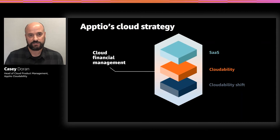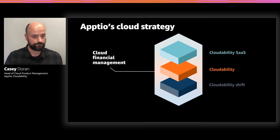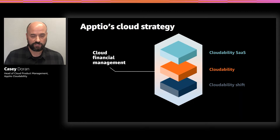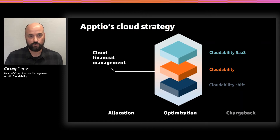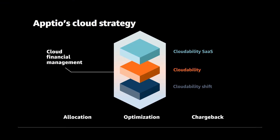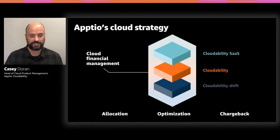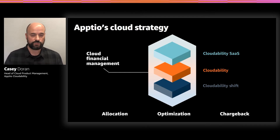You also want to think about SaaS as well — one of the largest spend drivers in the cloud — and this is the focus of our Cloudability SaaS product. Three primary things you want to think about in all of these areas: how you allocate costs, how you optimize those costs, and how you perform chargeback to the right cost centers. Considering both your traditional and containerized infrastructure, you have two different ways to think about cost allocation.